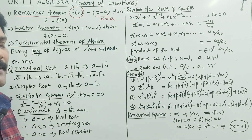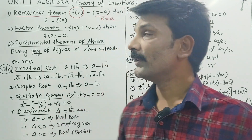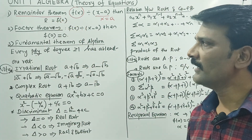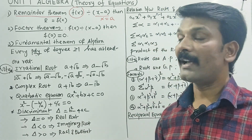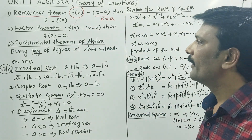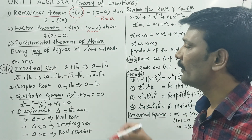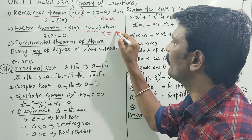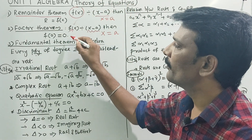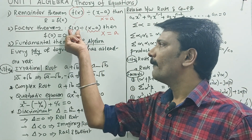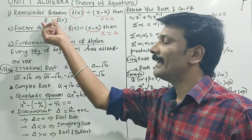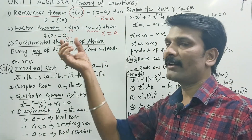Remainder: x is equal to plus a, x is equal to minus a. So x is equal to plus a. If you have a given polynomial and the final answer is 0, then f of x is equal to a.